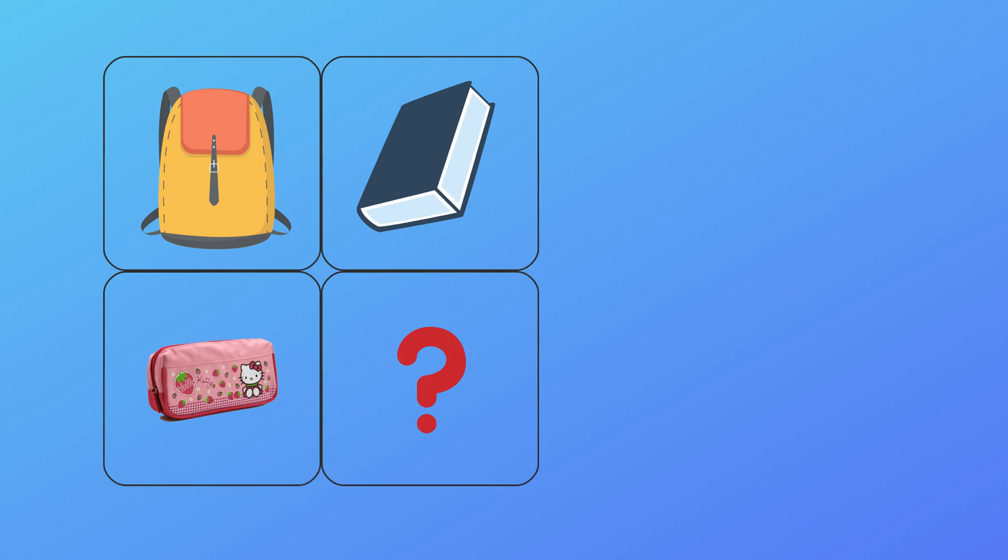Let's see an example. Let's see how the top two pictures are related. First picture is a bag, second picture is a book. We can keep a book inside a bag. So let's apply the same rule to the bottom picture.